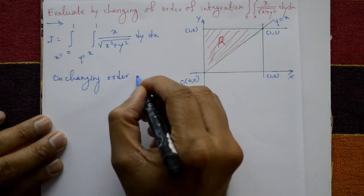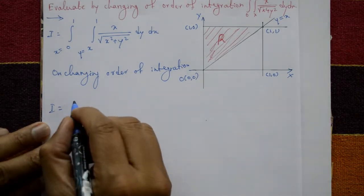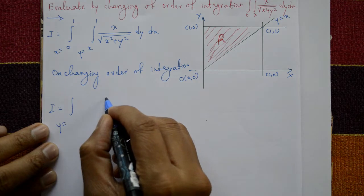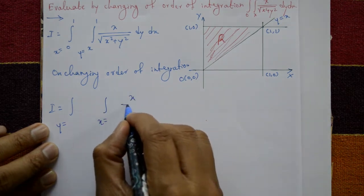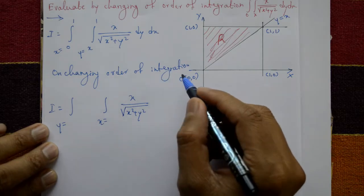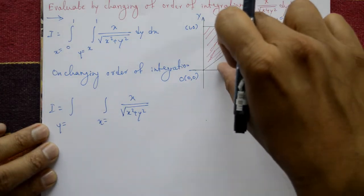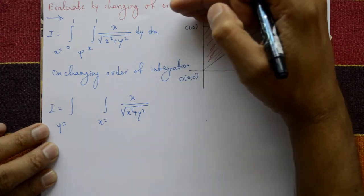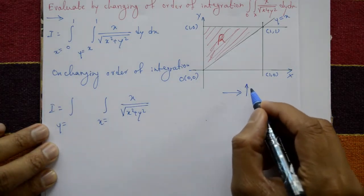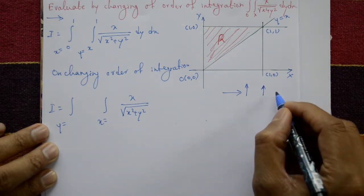On changing the order of integration, I becomes: integration with first y, then second x. The function is unchanged — x upon square root of x squared plus y squared. Now change the order: take y as the first (outer) variable. The boundary for y is from 0 to 1. This area goes bottom to top for y, and left to right for x. After changing order: bottom to top first, then left to right.